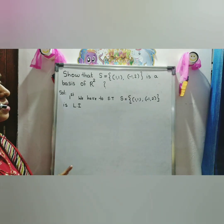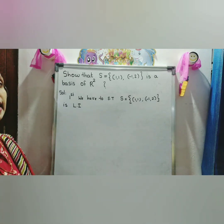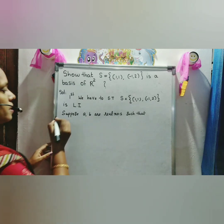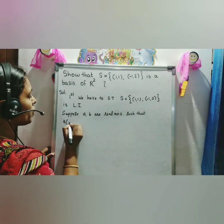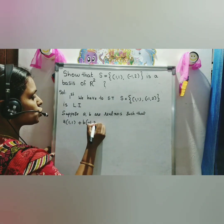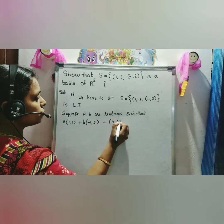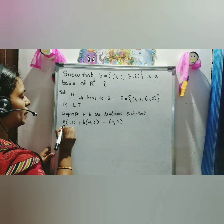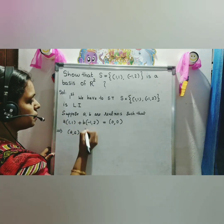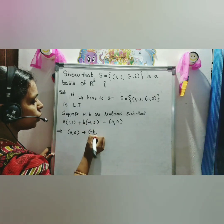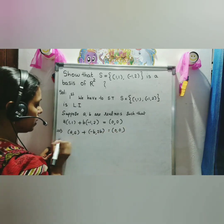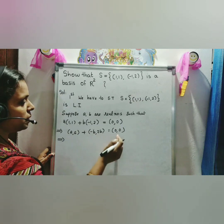First we have to show that S = {(1,1), (-1,2)} is linearly independent. Suppose that A and B are real numbers such that A·(1,1) + B·(-1,2) = (0,0). That implies A·(1,1) + B·(-1,2) gives us A - B = 0.